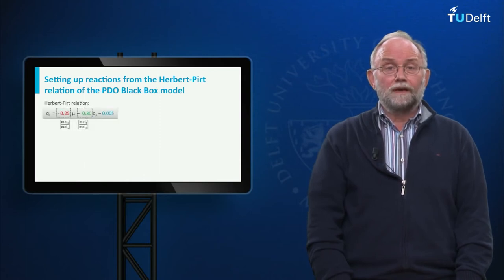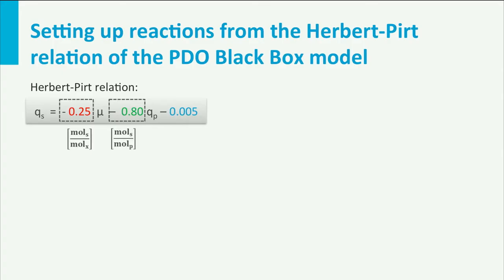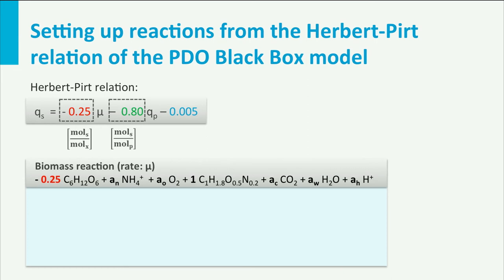Let us take the Herbert-Pert relation of the PDO black box model, which tells us that the cell needs 0.25 mol glucose to make 1 mol biomass. This allows us to construct the black box biomass reaction, where 1 mol biomass is produced from 0.25 mol glucose, and where the other reactants are the N-source ammonia, oxygen, carbon dioxide, water, and proton, indicated by stoichiometric coefficients A_N, A_O, A_C, A_W, and A_proton.